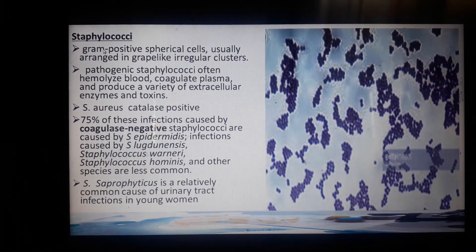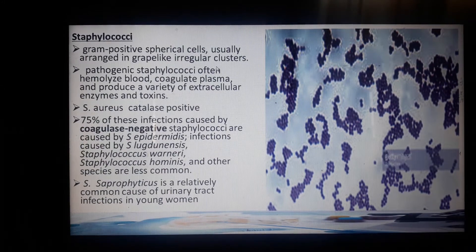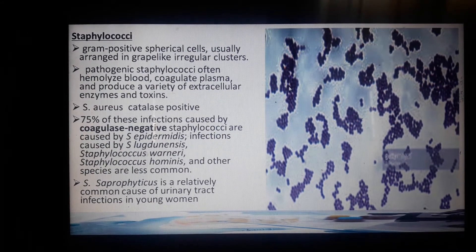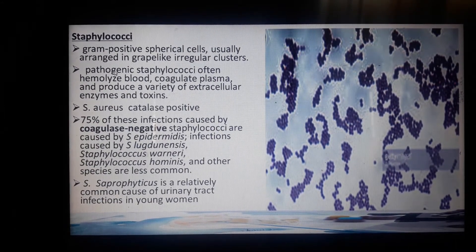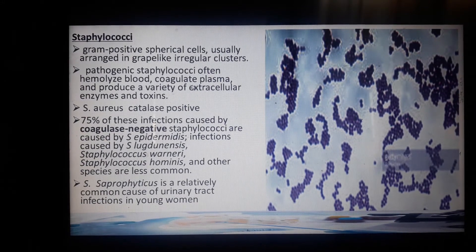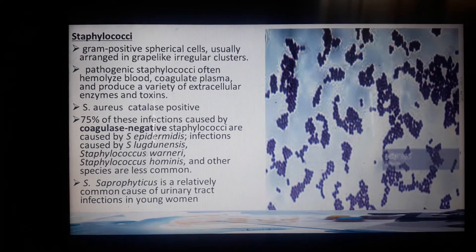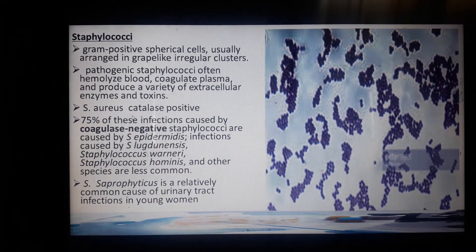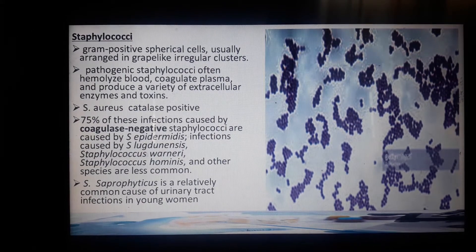Staphylococci are gram-positive spherical cells usually arranged in grape-like clusters. Pathogenic staphylococci often hemolyse blood and can coagulate plasma because they are coagulase positive. They also produce a variety of extracellular enzymes and toxins. Staphylococci are catalase positive, and 75% of infections are caused by coagulase-negative staphylococci.